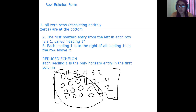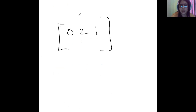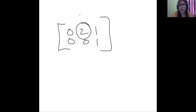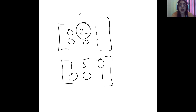Now consider another example: can we say that the matrix with entries 0, 2, 1 and 0, 0, 1 is in row echelon form? This is not a row echelon form, because we have a 2 here — this must be a 1. However, if we have 1, 5, 0 in the first row and 0, 0, 1 in the second row, then this is a row echelon form.